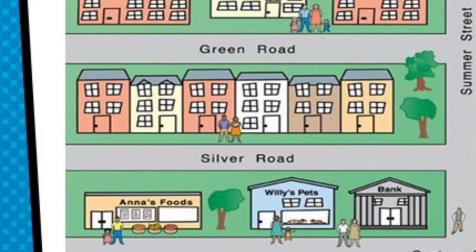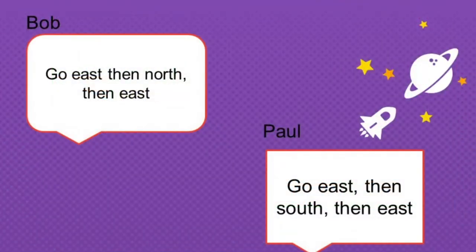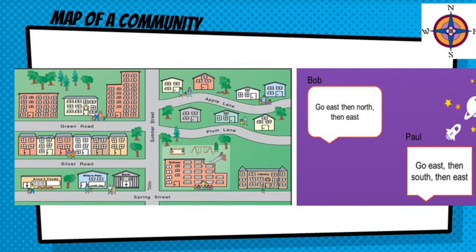Let's try another one. The Palmers are standing in front of their house on Green Road. They want to go to the library to read some books. Which directions would they go to get to the library? Let's listen to what Bob has to say: 'Go east, then north, then east.' And Paul is giving directions too: 'Go east, then south, then east.' Which of these boys is correct — Bob or Paul? Excellent — Paul is correct!